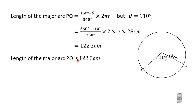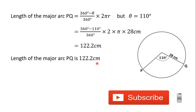So the length of the major arc PKO is 122.2 centimeters. Thank you for watching this video. I hope this video was helpful. Subscribe to this channel for more videos. In the next video we are going to learn how to find the area and perimeter of a sector. Bye bye.